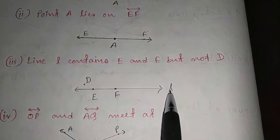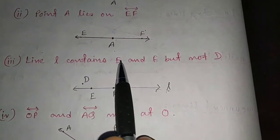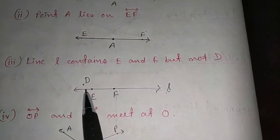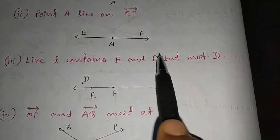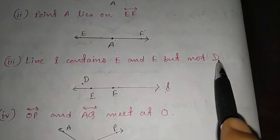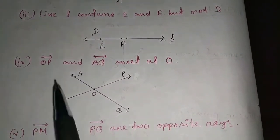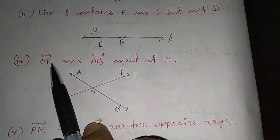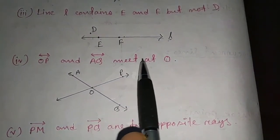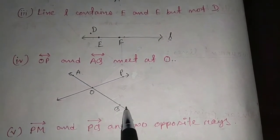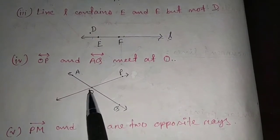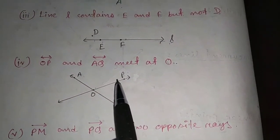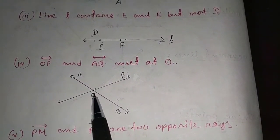Number three: line L contains E and F but not D. Draw line L with points E and F on it, and point D is placed outside the line. Number four: lines OP and AQ meet at O. There are two lines — AQ is one line and OP or PO is the other — and these two lines intersect each other, meeting at point O.